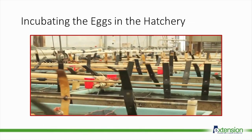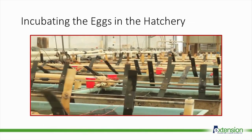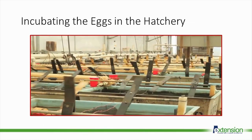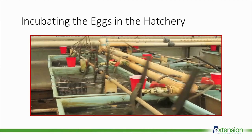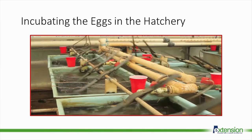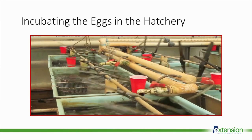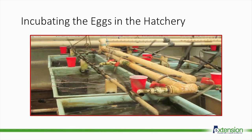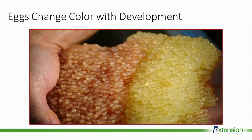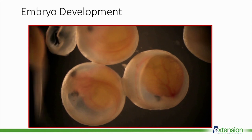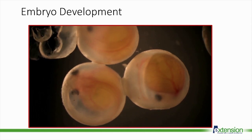In the hatchery, eggs are placed in baskets in a trough with slowly rotating paddles. These paddles mimic the movement of the catfish's tail sweeping over the eggs to keep them clean and provide them with plenty of oxygen. As the eggs develop, they change from a light yellow color to a rusty red color. Inside the egg, the embryo develops until it's ready to hatch.